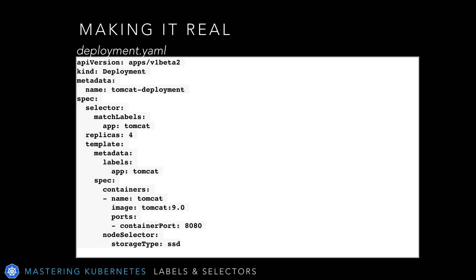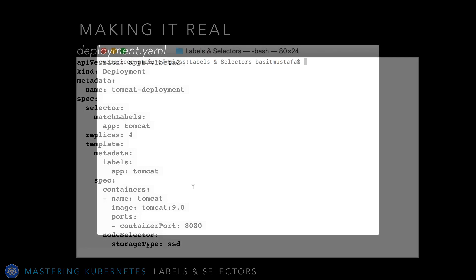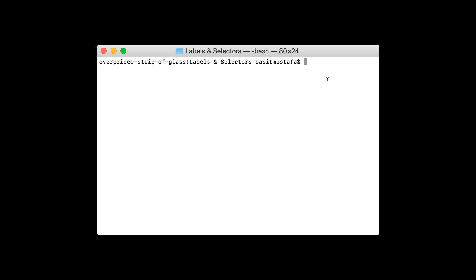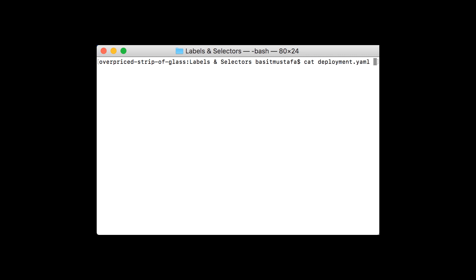If we scroll up, we can see that the label was successfully applied. Now that our label has been applied to our node, we'll need to apply the node selector to our deployment. Let's go look at the deployment.yaml file — this is available in GitHub under the labels and selectors directory. The deployment.yaml file looks pretty much like we have throughout this course, except we've added node selector with storage-type equaling SSD. This tells Kubernetes that when it's selecting nodes to deploy Tomcat onto, it should look for a label named storage-type with the value SSD.